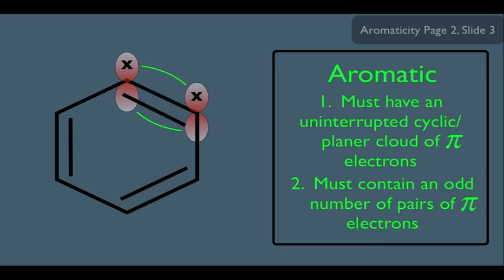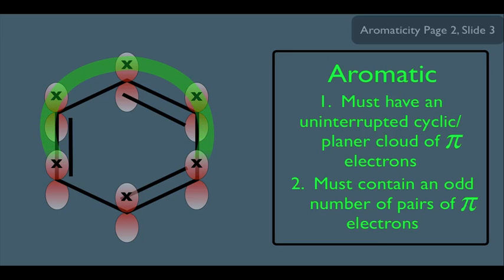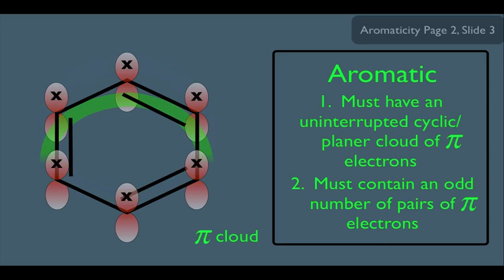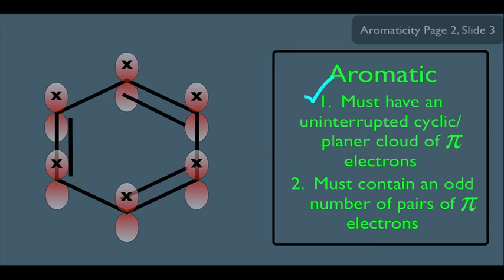Notice the double bond in the lower right. In order to make sense of it, the two carbons must have two unhybridized p-orbitals sideways overlapping, and this is also true for the double bond on the left. We're only showing the p-orbitals, not all the other sp2 orbitals. What you see here is what's called an uninterrupted cyclic planar cloud of pi electrons. We can connect all of these pi electrons together, creating one big cloud — both the top and bottom lobes of the p-orbitals.